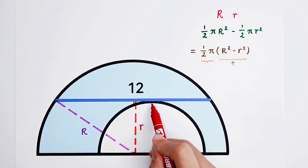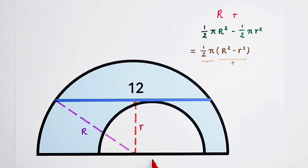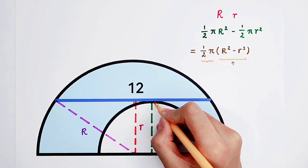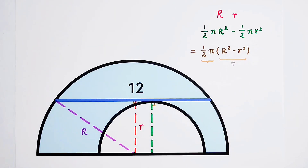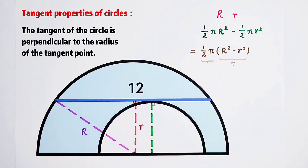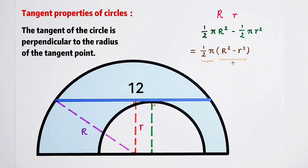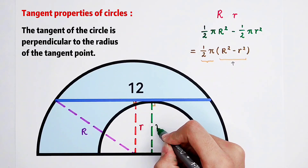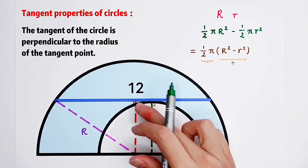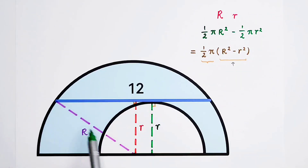Why is this piece small r? Here is the tangent, and here is the center of the small semicircle. Connect the center with the tangent point — this is the tangent point, this is the center — and here is also a right angle, because the chord is parallel to our diameter and these two angles are both right angles. So this green piece, which equals small r, is equal to the red piece. Therefore, this red piece also measures small r.